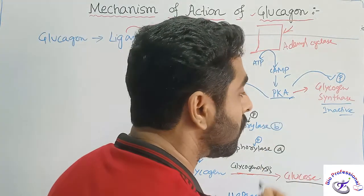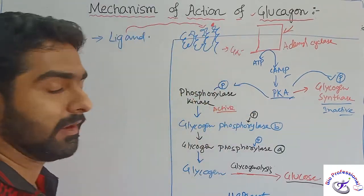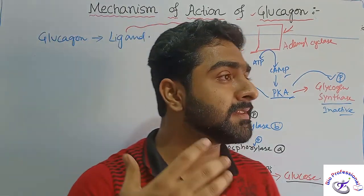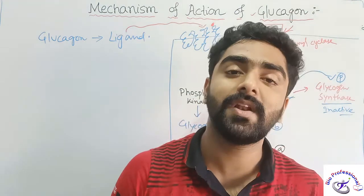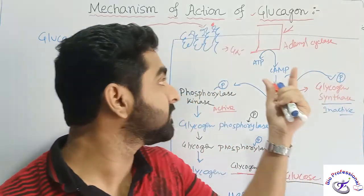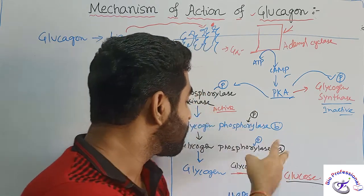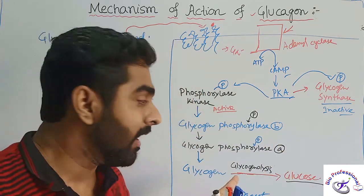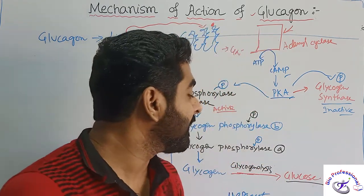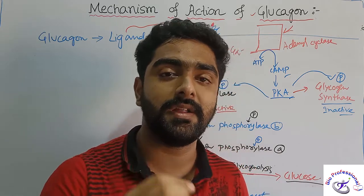Glucose is now present and the blood glucose level increases. All this process occurs in the hepatocyte — the liver cell. The liver cell has both the enzyme for synthesis of glycogen and the enzyme for breakdown of glycogen. When glucagon binds to its receptor, it ultimately activates glycogen phosphorylase a, which acts on glycogen, and through glycogenolysis glucose is formed, increasing blood glucose level.